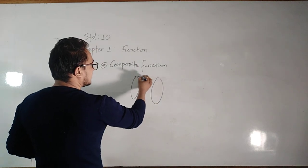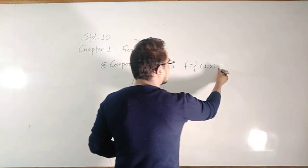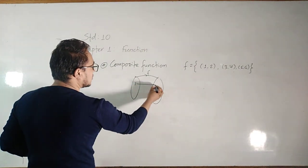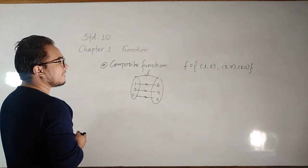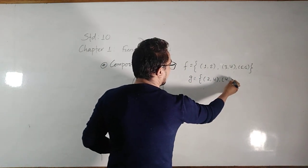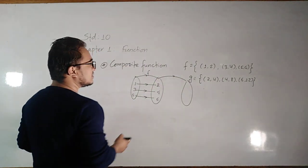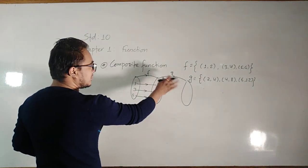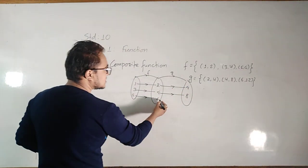For example, suppose f is a function: 1→2, 3→4, 5→6. How to show it in mapping diagram? Input 1 has output 2, input 3 has output 4, and input 5 has output 6. This is function f. But suppose if there is one more function z: 2→4, 4→8, 6→12. Then z is a function. If we adjoin it with f, then the output of f plays the role of input for z. In z function, 2 has output 4, 4 has output 8, and 6 has output 12.